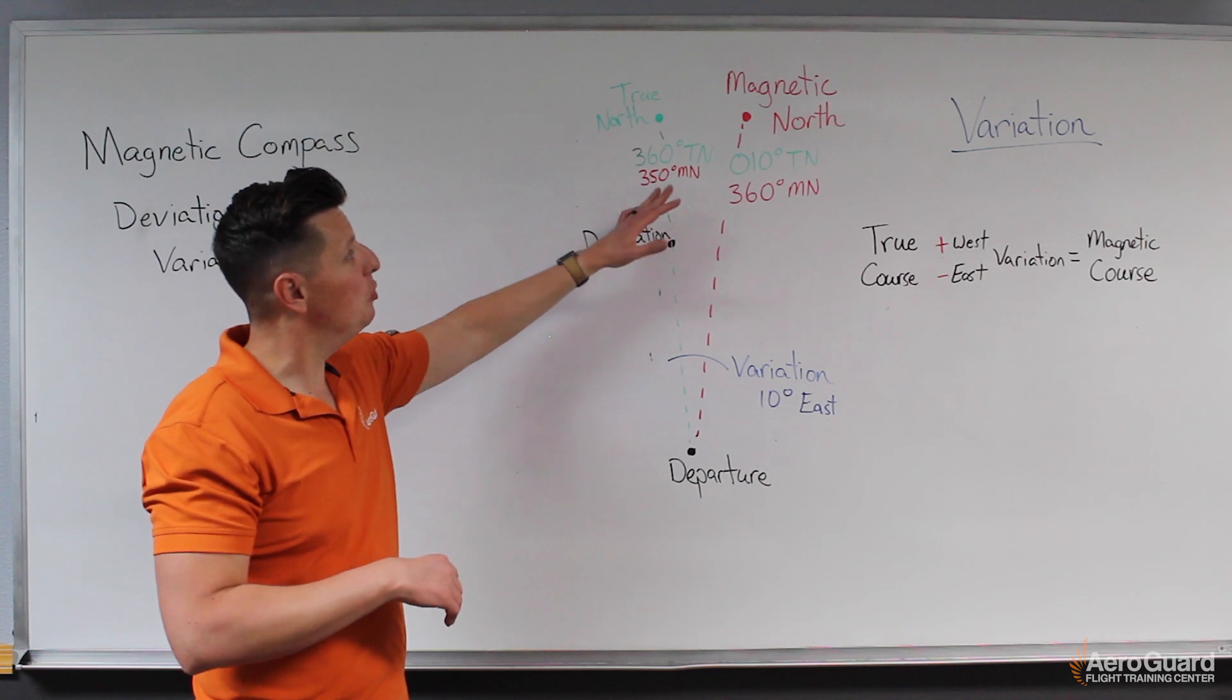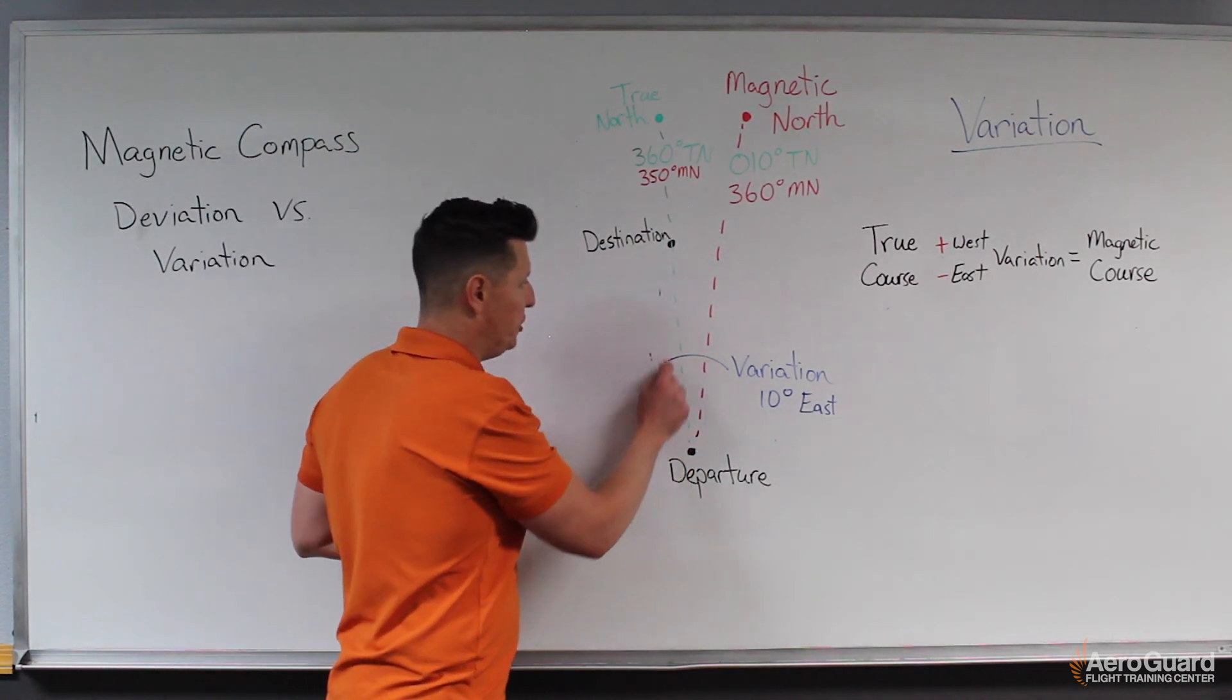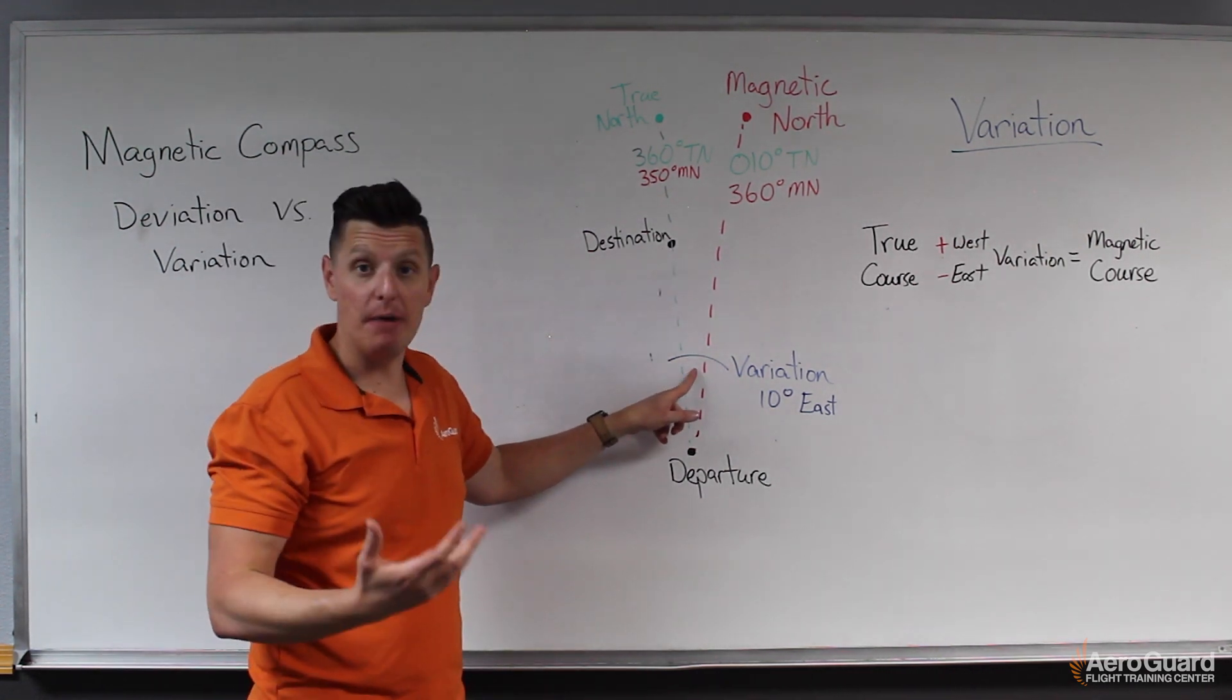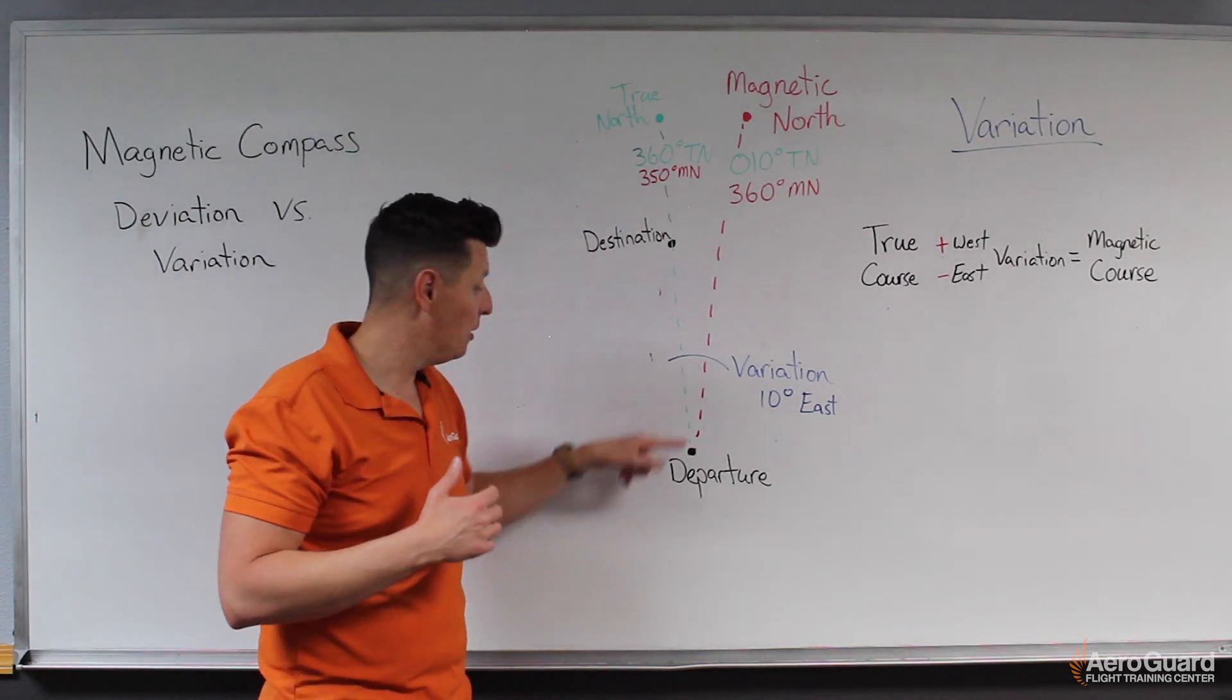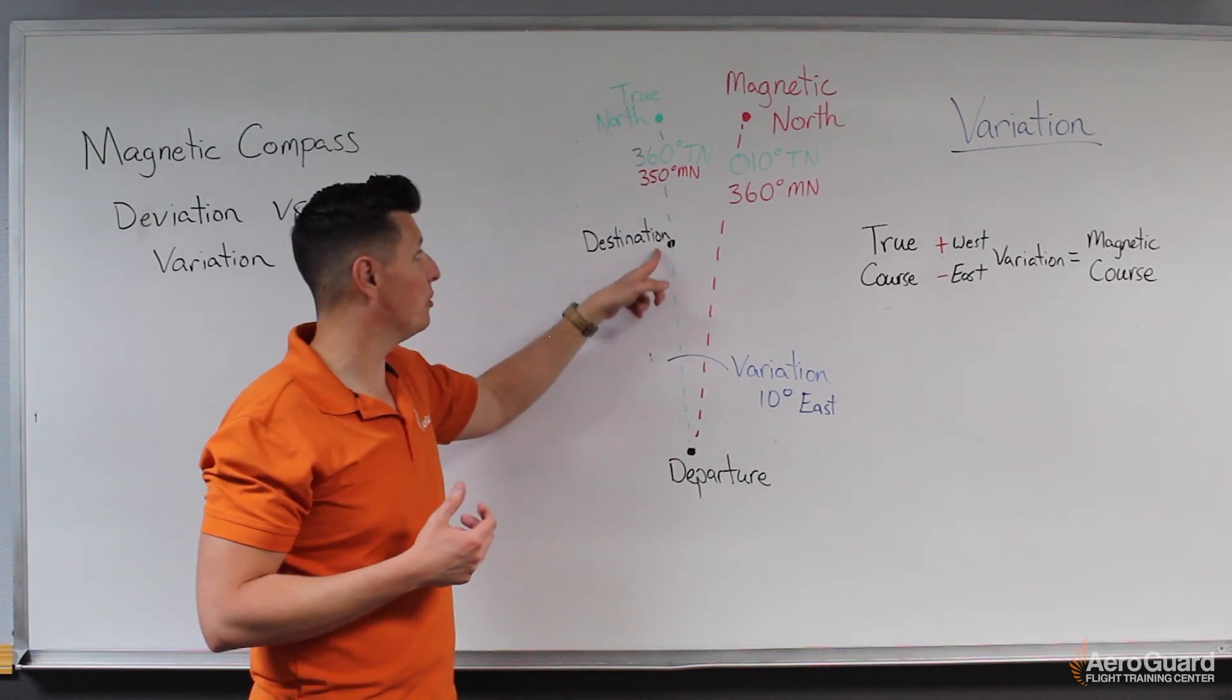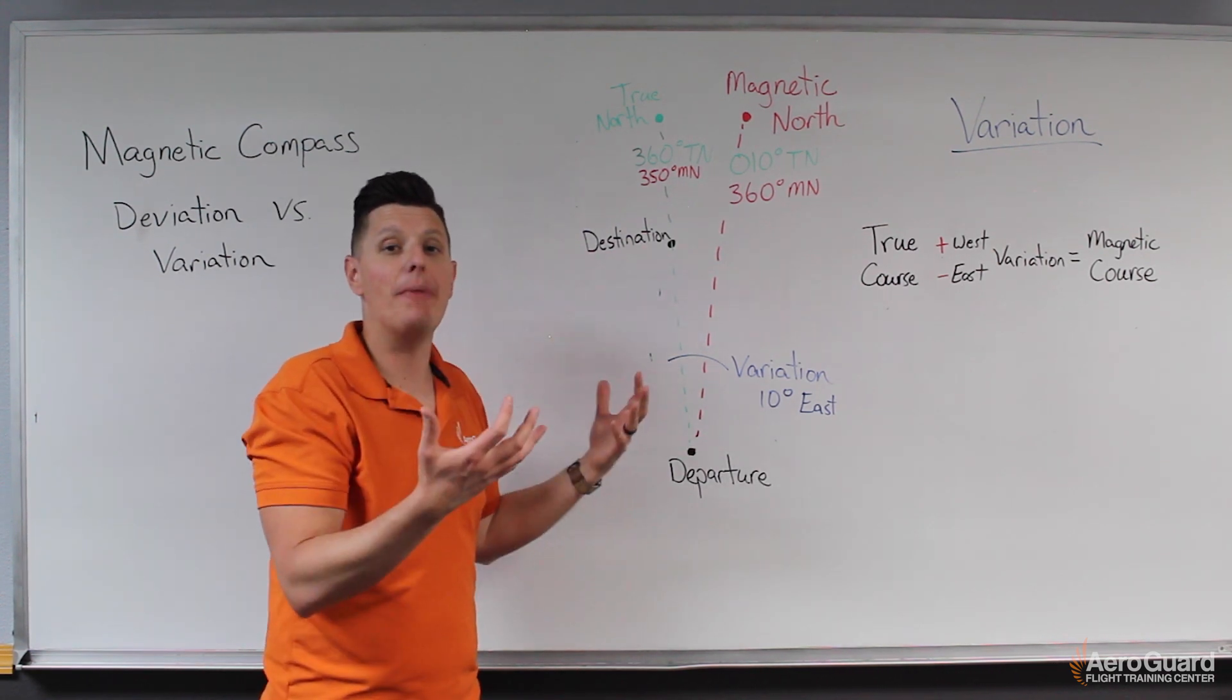So once again, going back to our example here, I know that if I wanted to fly this green course that would take me directly to this destination, I would need to adjust my compass. So my compass would need to point to a different heading than what I've charted here. So we want to find out our true course, which is 360 degrees to get to this destination. What does that translate to as far as our magnetic compass?